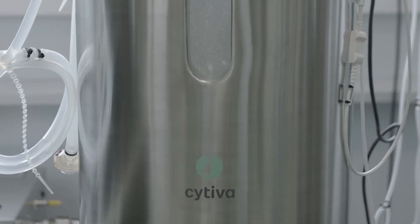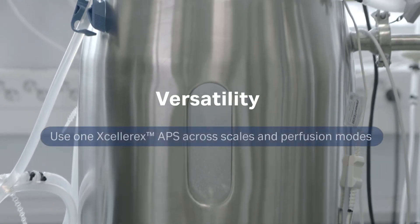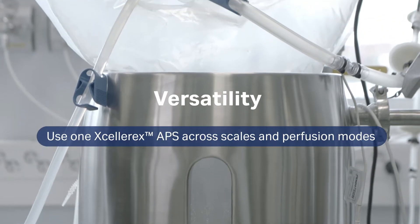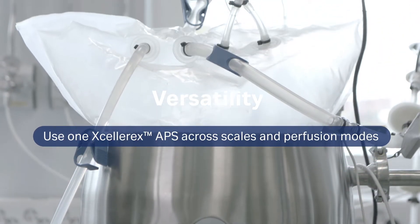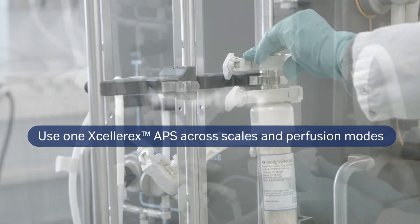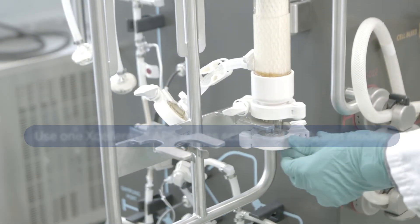Use the Accelarex APS with 50, 200, or 500 liter XDR bioreactors and for a variety of perfusion modes. It's compatible with many hollow fiber filter sizes and types.